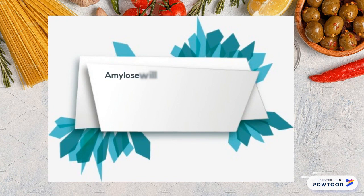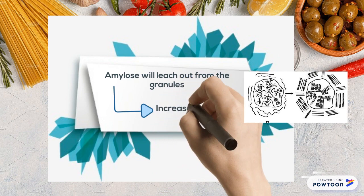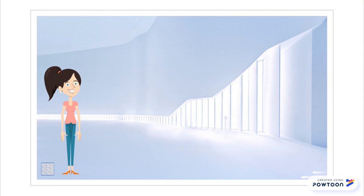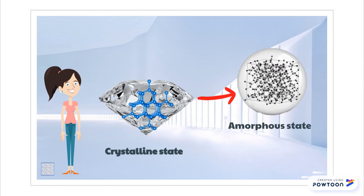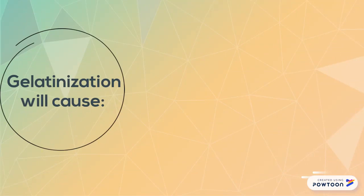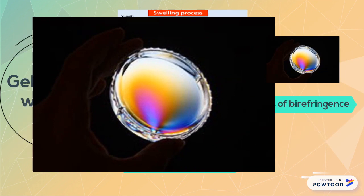Besides that, it will also cause the amylose to leach out from within the granules and cause an increase in viscosity. When the starch is gelatinized, the ordered crystalline state of the starch will change to a disordered amorphous state, hence the viscosity increases. This alteration will cause irreversible swelling, loss of birefringence, and reduced crystallinity.